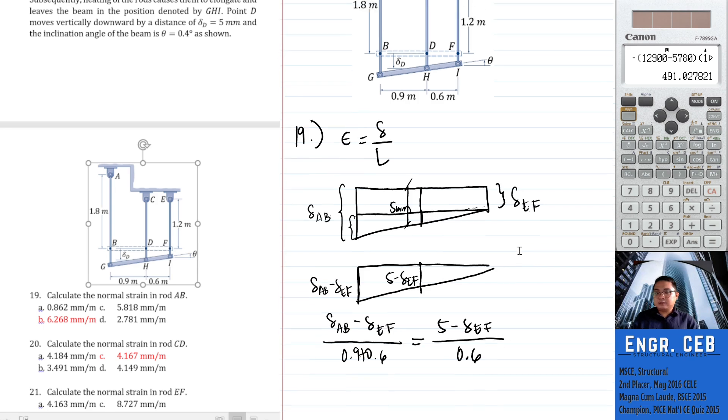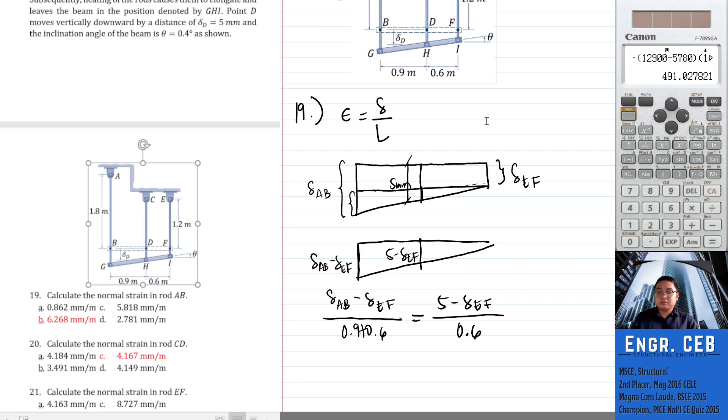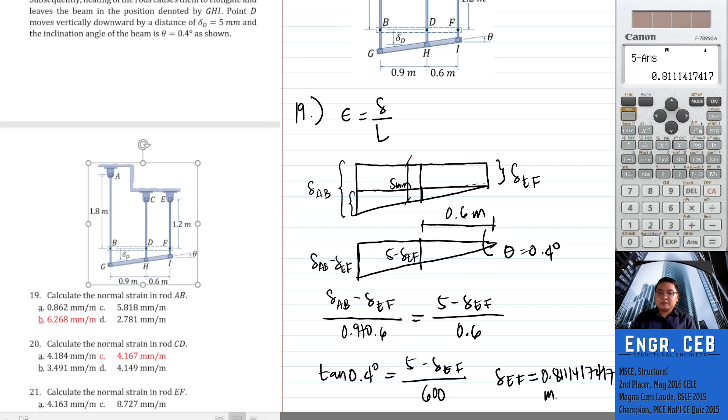Aside from that, you're given the angle of inclination. From the angle of inclination, we can use trigonometric functions. If this is 0.6 meters, tangent of 0.4 degrees equals the opposite, which is 5 minus delta EF, over the adjacent, 0.6. With that, you can now compute the deformation EF. We just need to make the units consistent - the distances are in meters, the 5 is in millimeters, so we should make this 600. The deformation of segment EF is 0.811417417 millimeters.